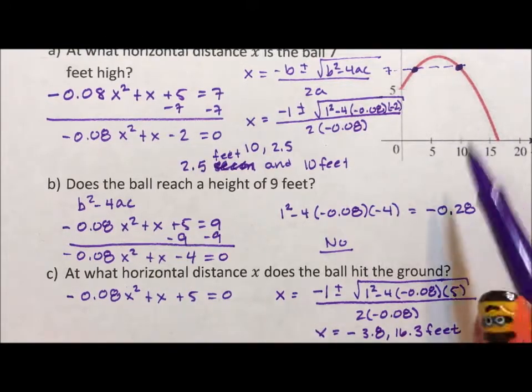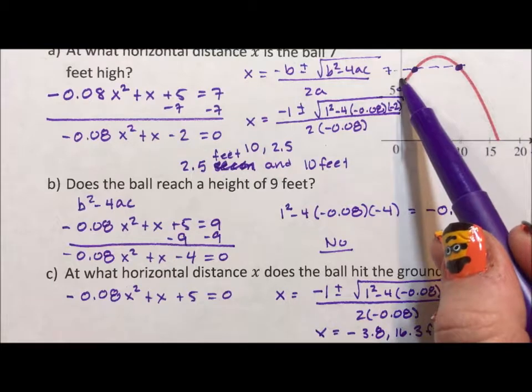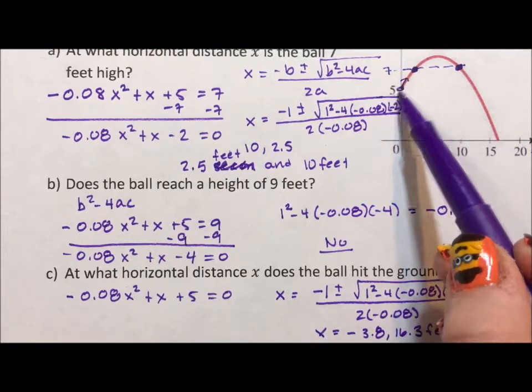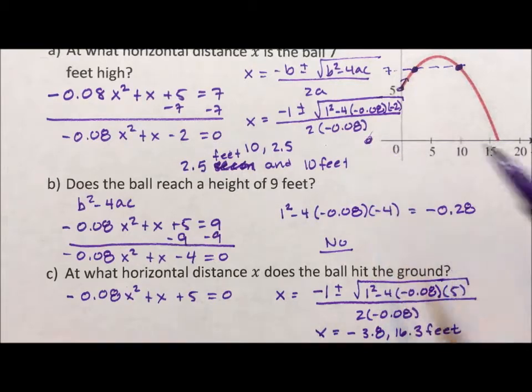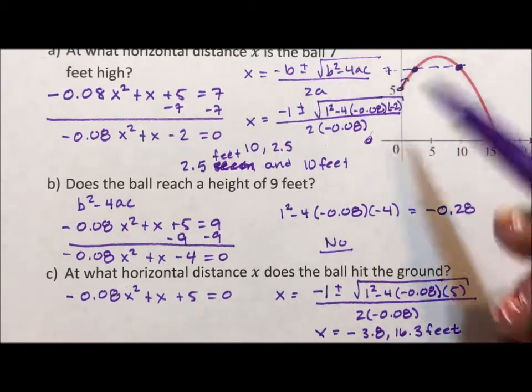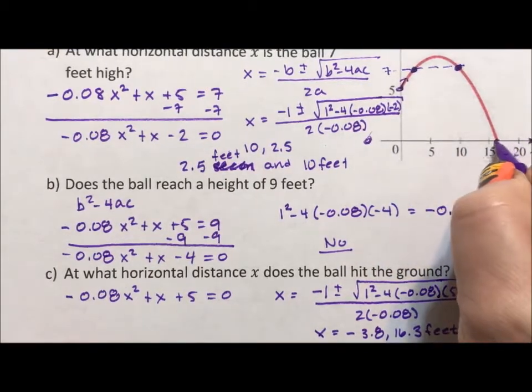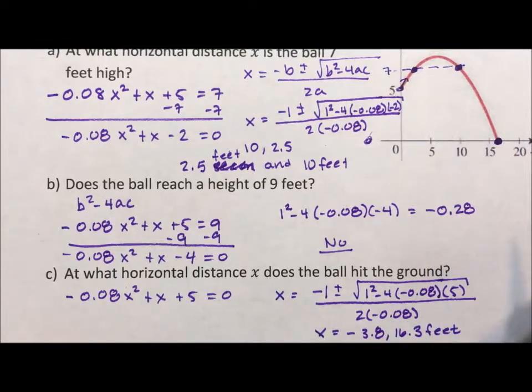Now, this makes sense because if we look at our graph, we're starting at 5 feet and going up, which means if we could take the exact same trajectory and go back in time, we would hit the ground. But that's not how the real world works. But at 16.3 feet, we're on the ground.